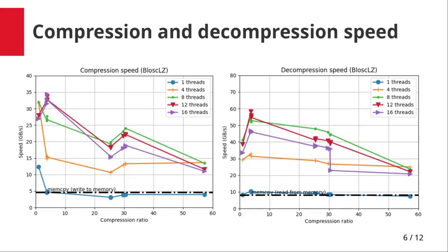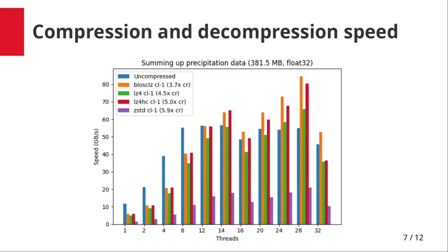Here you can see the kind of speed that Blosc can reach for BloscLZ, its default codec, using synthetic data. And here is the speed for a picture of real data for a variety of codecs that come with Blosc2. Thus, you can see how compressing with Blosc allows accelerating real computations if you throw enough cores at the task.